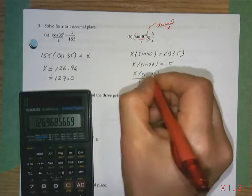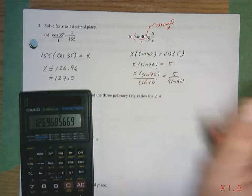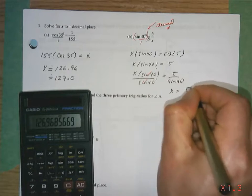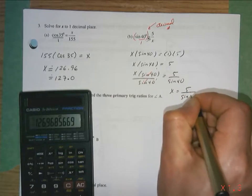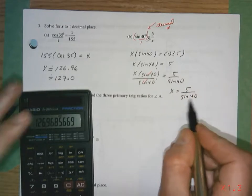So what happens here is these two reduce out, leaving us with x equals 5 over sine of 40. This is simply a decimal number.